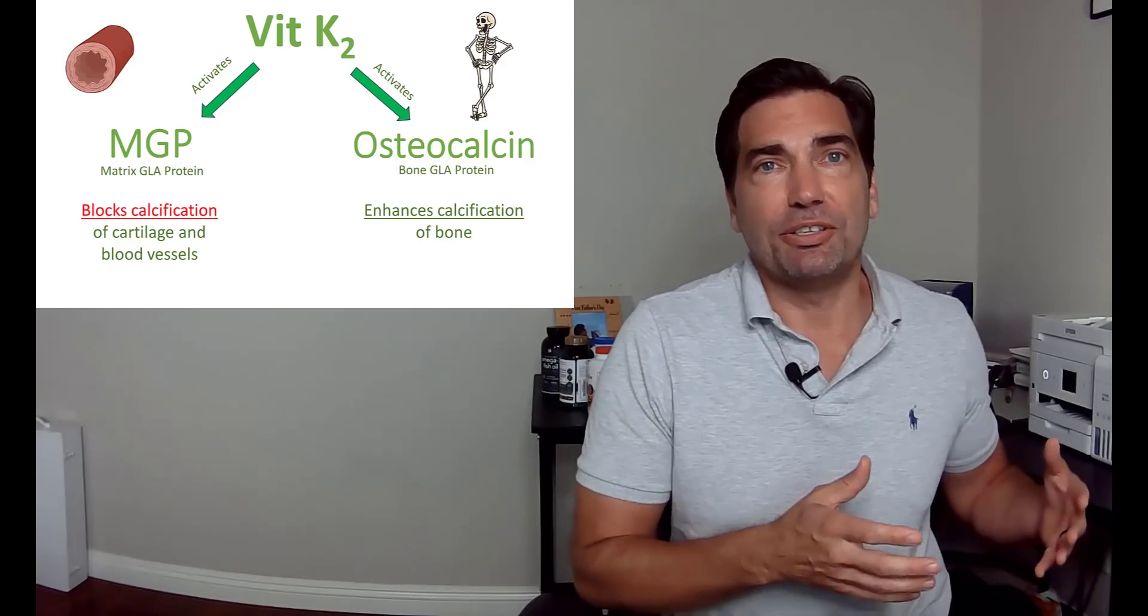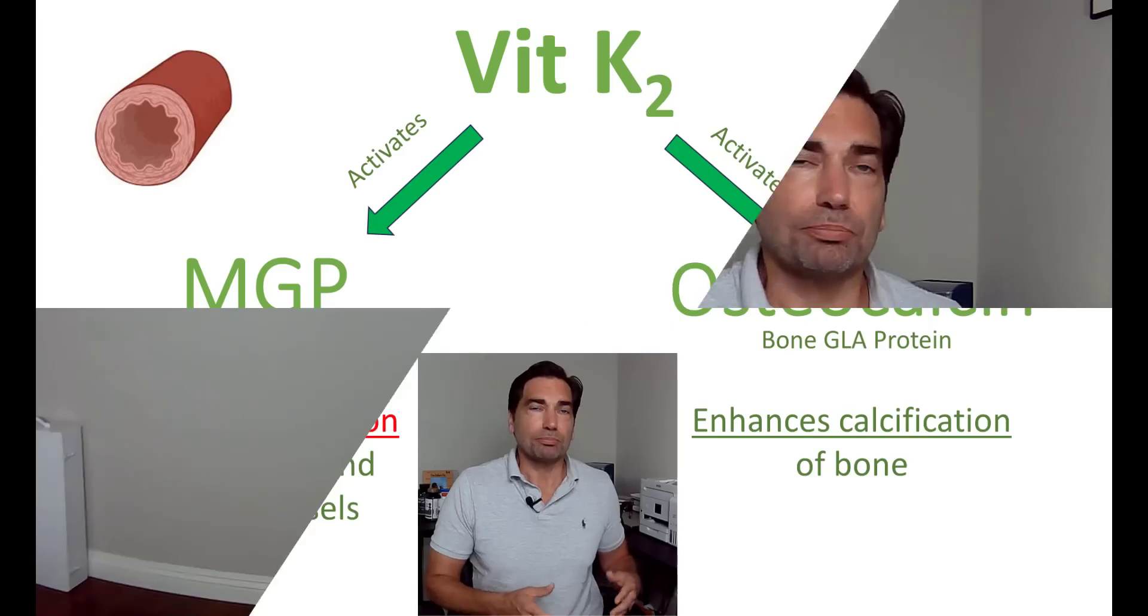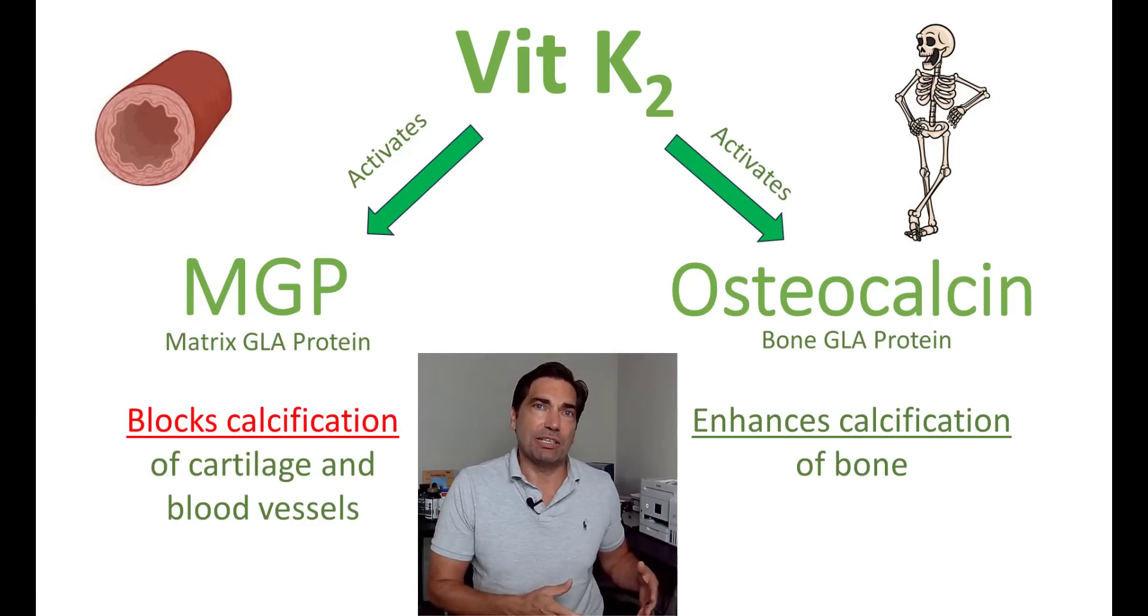Conversely, there's another protein called MGP, and MGP is kind of like that stop sign. It says stop putting down bone in the arteries. Without MGP, your fibroblasts and the smooth muscle tissue inside the arteries will actually start to lay down bone matrix and calcify it within the arterial walls, and this also happens in your cartilage making your cartilage stiff as well.